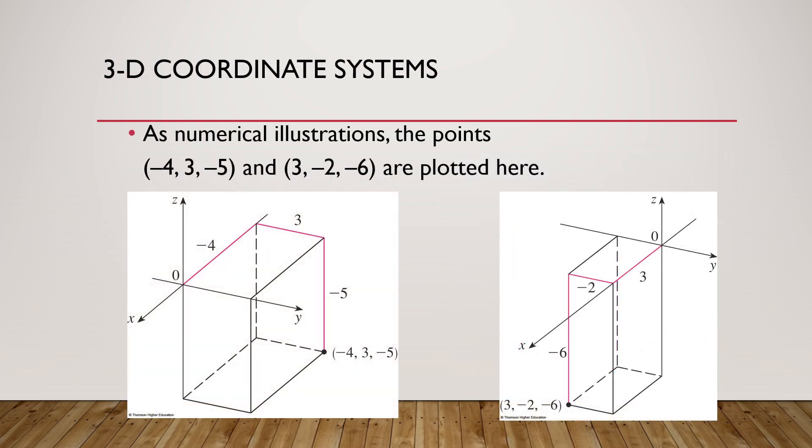A numerical illustration can define this problem easily. Let's say, we have a coordinate, that is, minus 4, 3, minus 5, and 3, minus 2, minus 6.